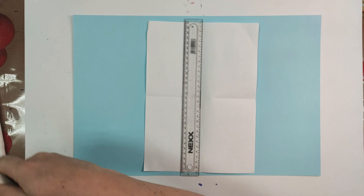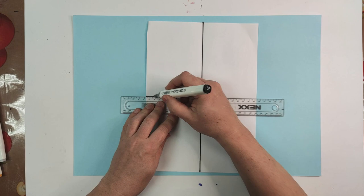Now, draw a border, a ruler width, all the way around your page. This is going to form the basis of our Mondrian art.